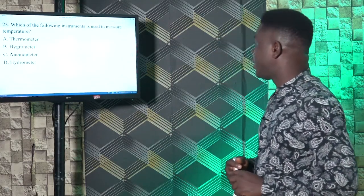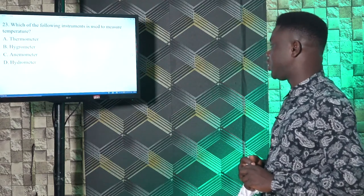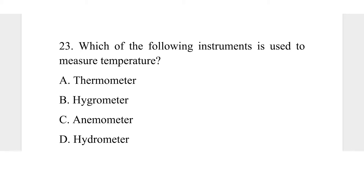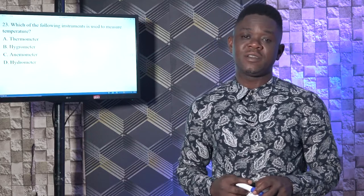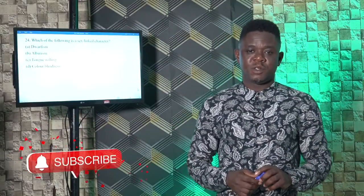Question 23. Which of the following instruments is used to measure temperature? A, thermometer; B, hygrometer; C, anemometer; D, hydrometer. The correct answer is A, thermometer. Thermometer is used for measuring temperature. Hygrometer is used for measuring humidity. Anemometer is used for measuring wind speed. So the instrument used for measuring temperature is thermometer. The correct answer is A.